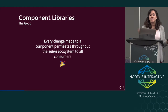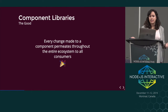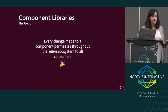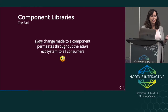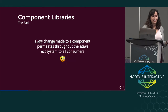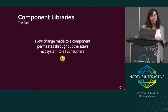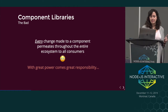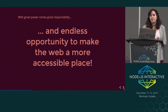Component libraries are an amazing tool, because every change you make to a component — as long as your developers are using those components — gets permeated throughout the entire ecosystem. You can make one accessibility fix, and suddenly everyone consuming that component also gets that fix. But it also means every change permeates the entire ecosystem: you can introduce a bug, and everyone consuming that component gets that bug. Bugs typically get caught with tests, but an accessibility bug might not get caught. If I make a change that deters accessibility, everyone consuming that component is suddenly inaccessible as well.